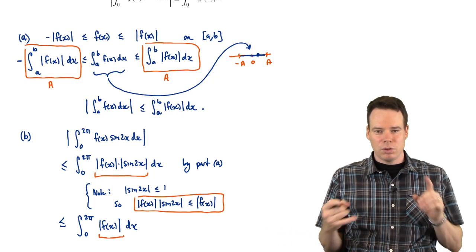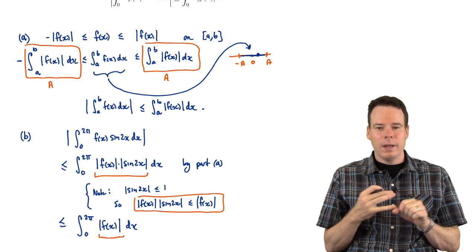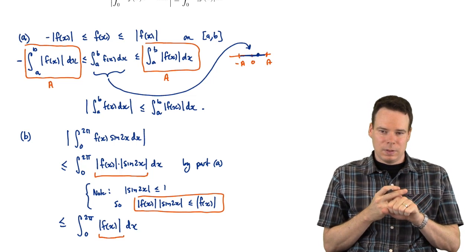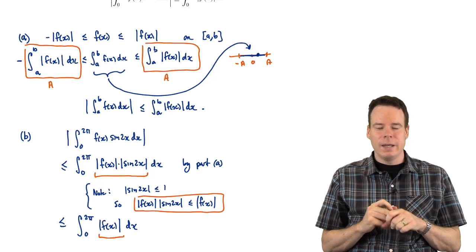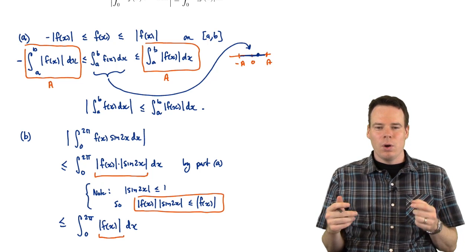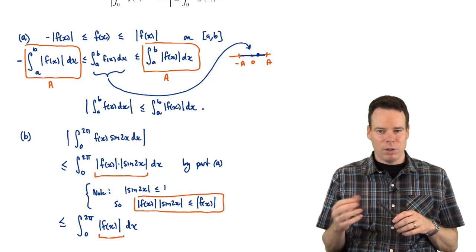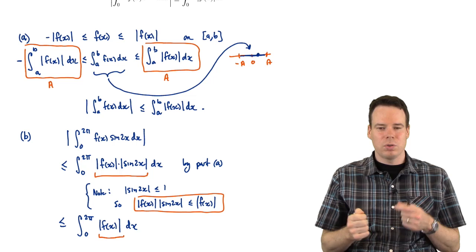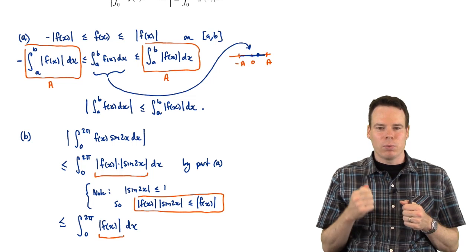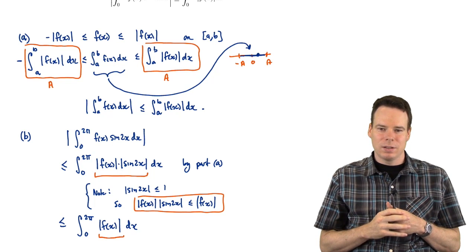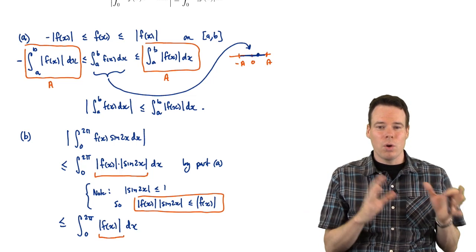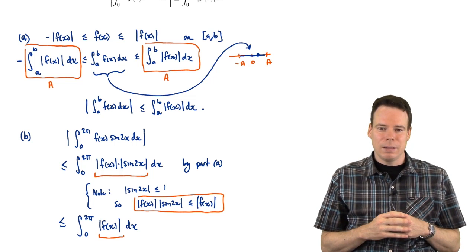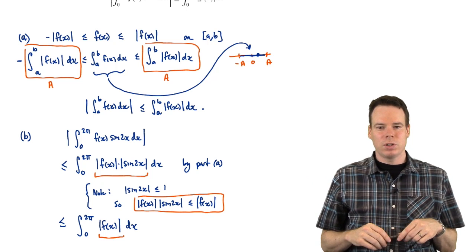So that's it for this lecture. We introduced the definite integral, did some more examples of computing it, and then looked at some properties of the integral. In the next lecture we're going to make the connection via the fundamental theorem of calculus, which connects integration with anti-differentiation. We'll see much quicker ways to compute integrals using anti-derivatives, so we don't always have to go back to the limit of a Riemann sum. Thanks very much for watching and we'll see you again next time.